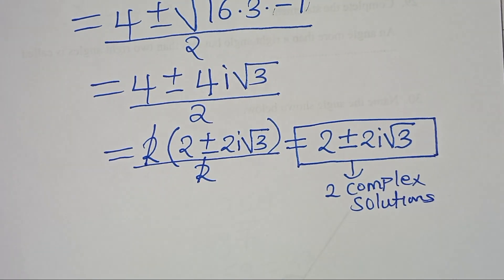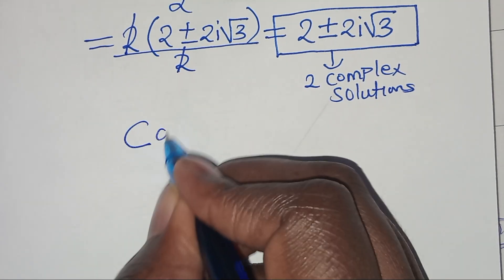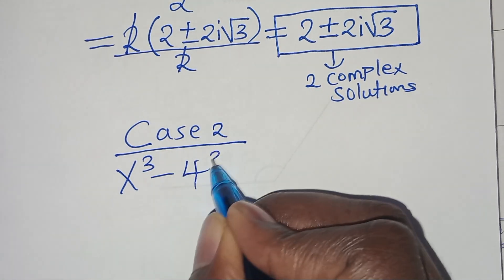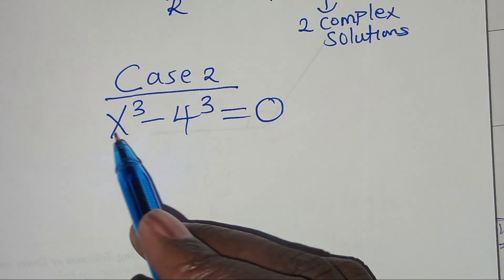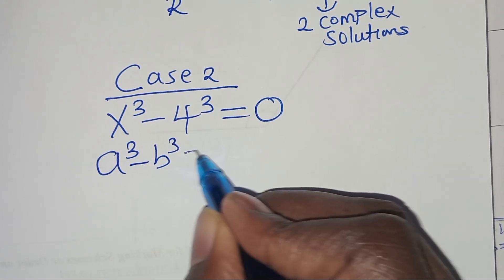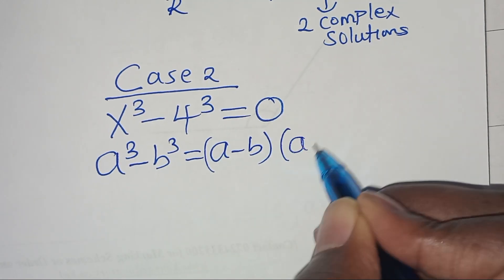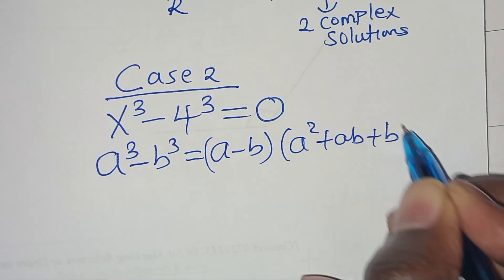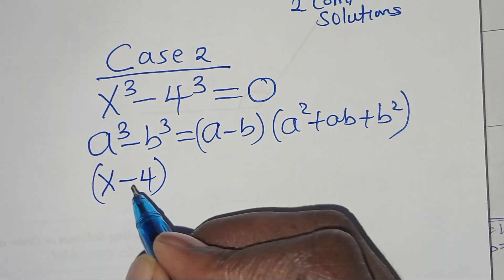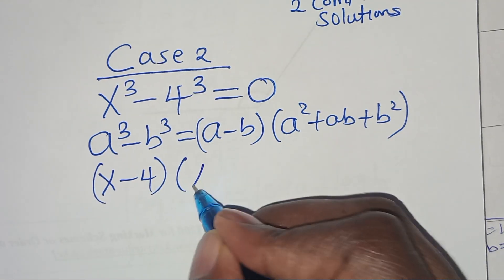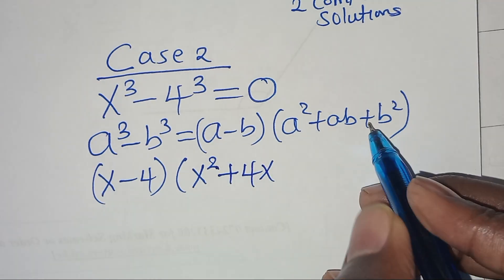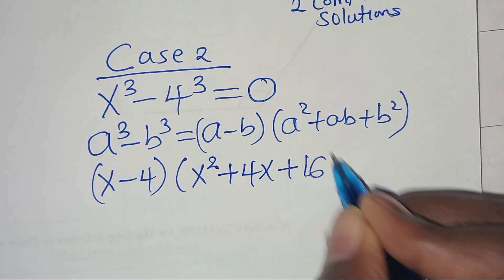Now let's proceed to Case 2, where we have x³ subtract 4³ = 0. This is the difference of two cubes, expressed as a³ - b³ = (a - b)(a² + ab + b²). Applying this: x³ - 4³ becomes (x - 4)(x² + 4x + 16) = 0.